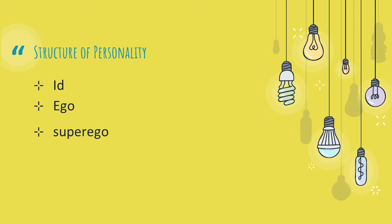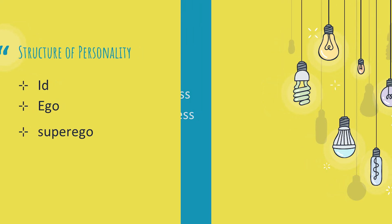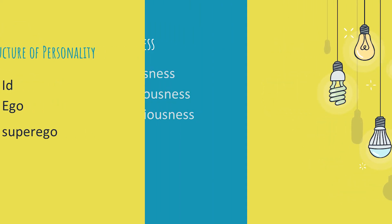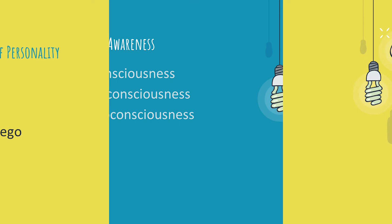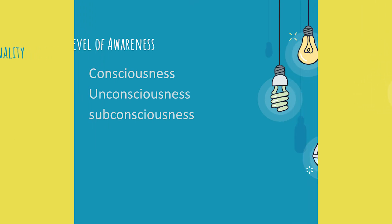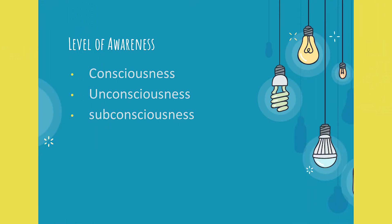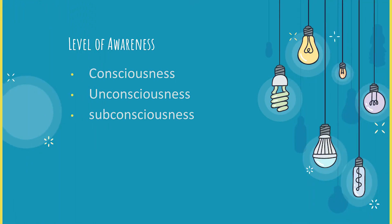The last one is superego, which is the moral component of personality. It focuses on what is right and what is wrong. Freud also gives three levels of awareness: consciousness, pre-consciousness, and unconsciousness.